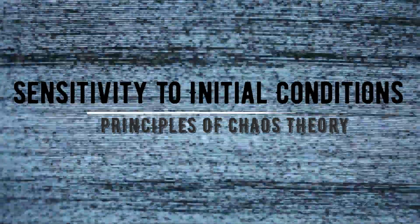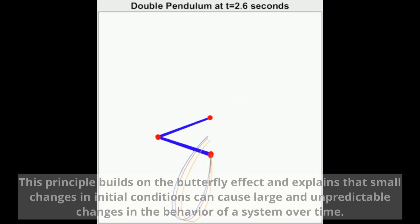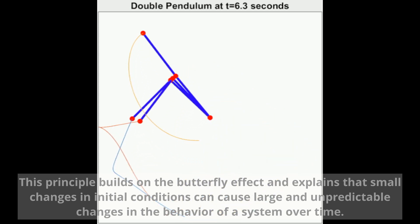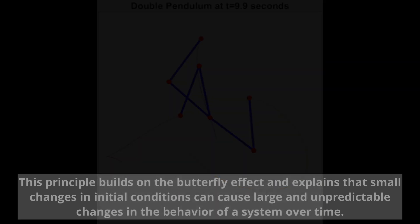Sensitivity to Initial Conditions. This principle builds on the Butterfly Effect and explains that small changes in initial conditions can cause large and unpredictable changes in the behavior of a system over time.